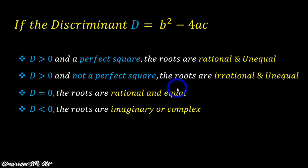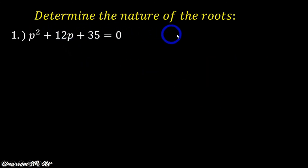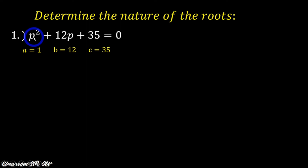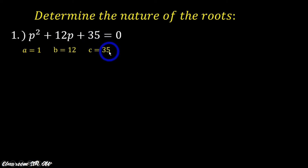Now let us apply this conclusion about the discriminant with some examples. We are asked to determine the nature of the roots. Number 1: p squared plus 12b plus 35 is equal to 0. The first thing to do is identify the values of our coefficients a, b, and c. Our a is 1, the coefficient of the quadratic term p squared. Our b is 12, the coefficient of the linear term 12b. And our c is our constant term, which is 35.